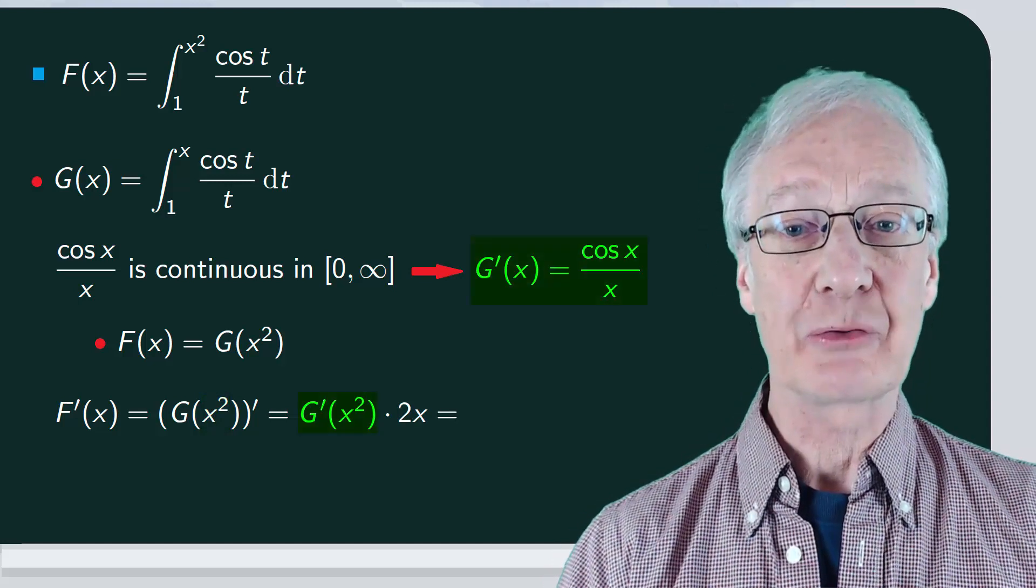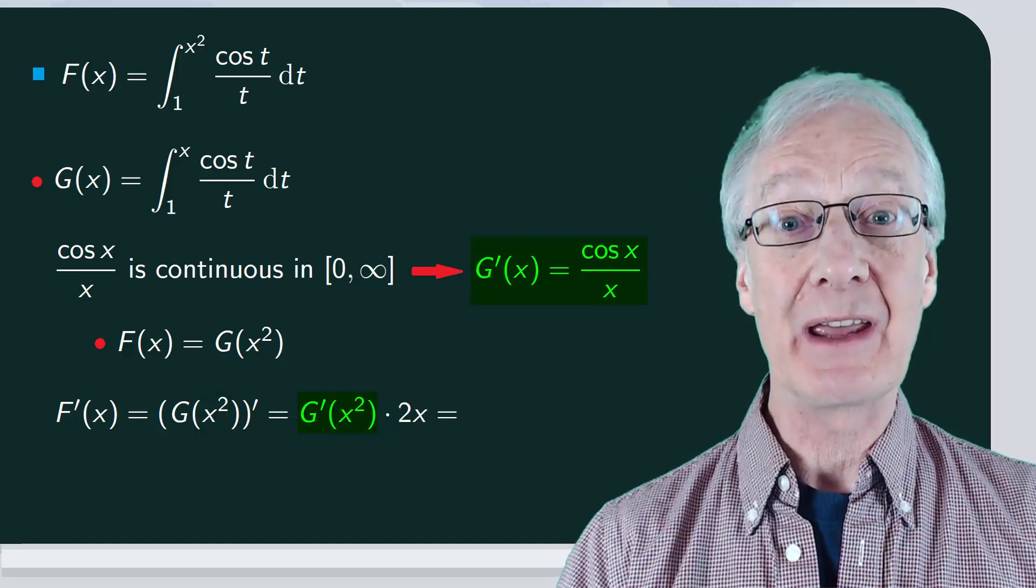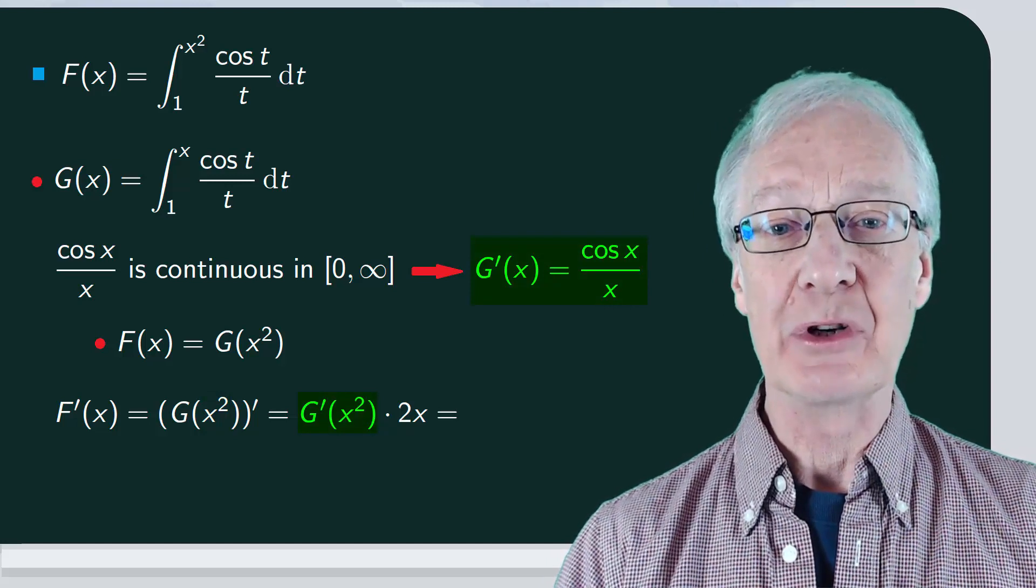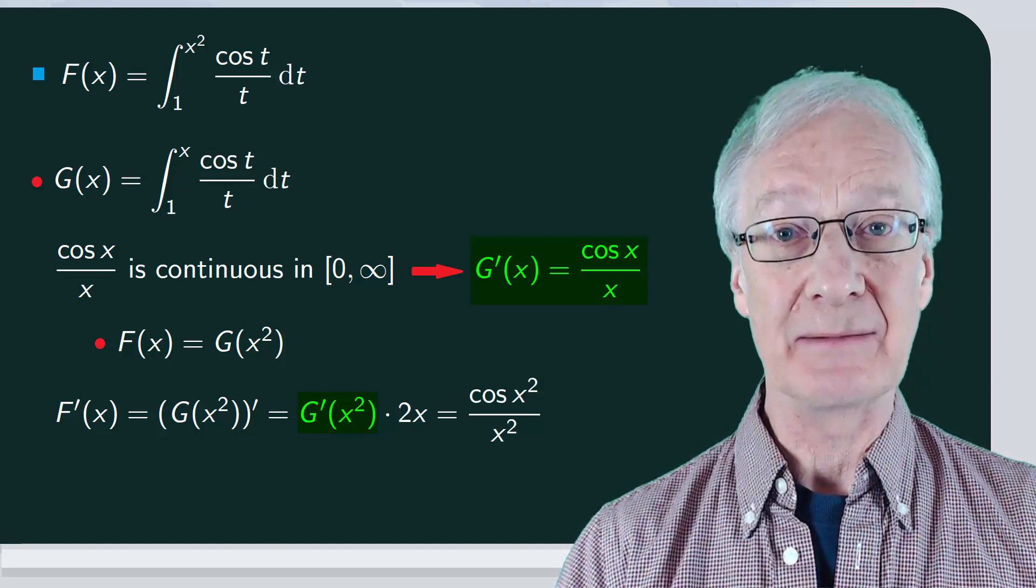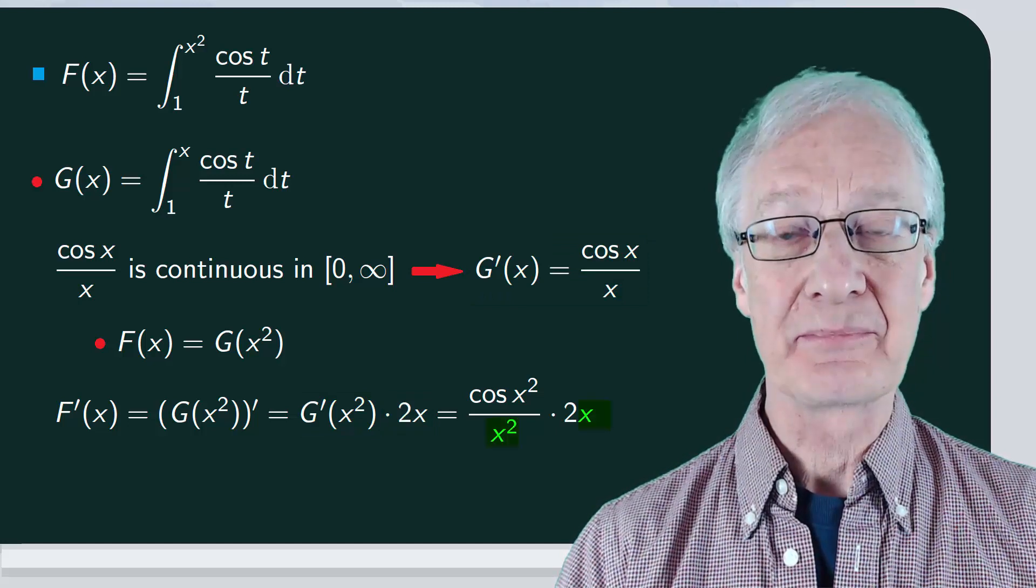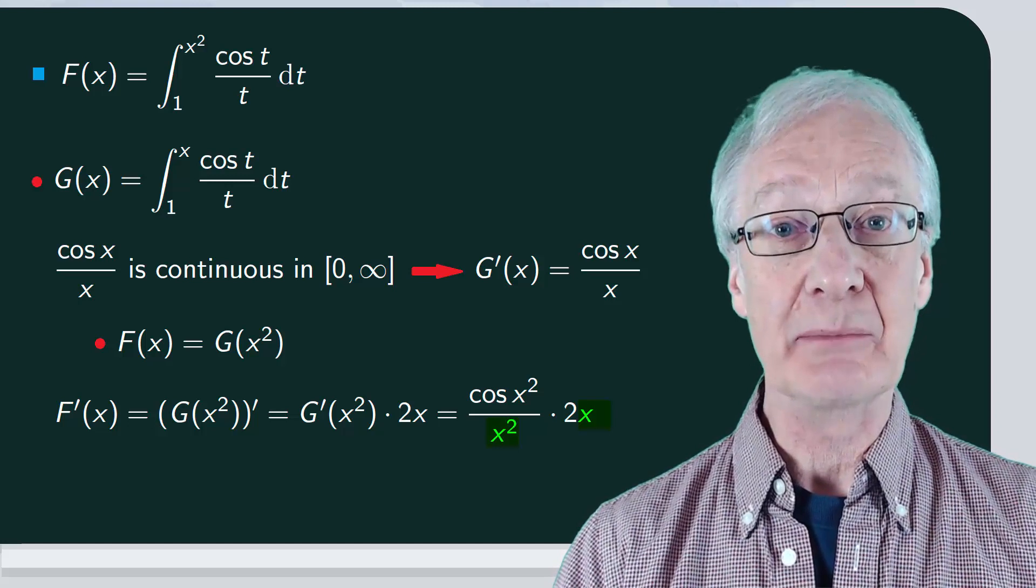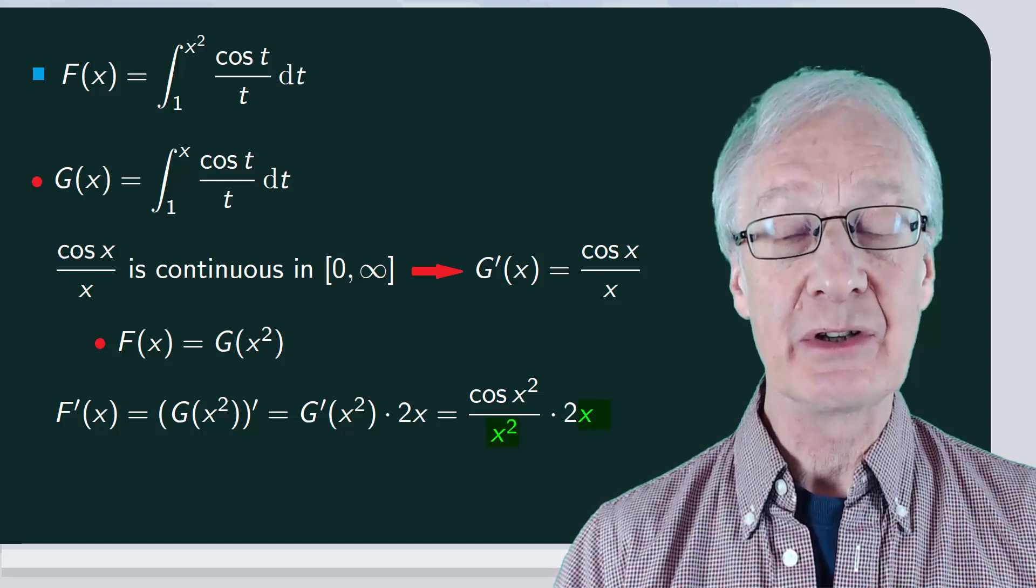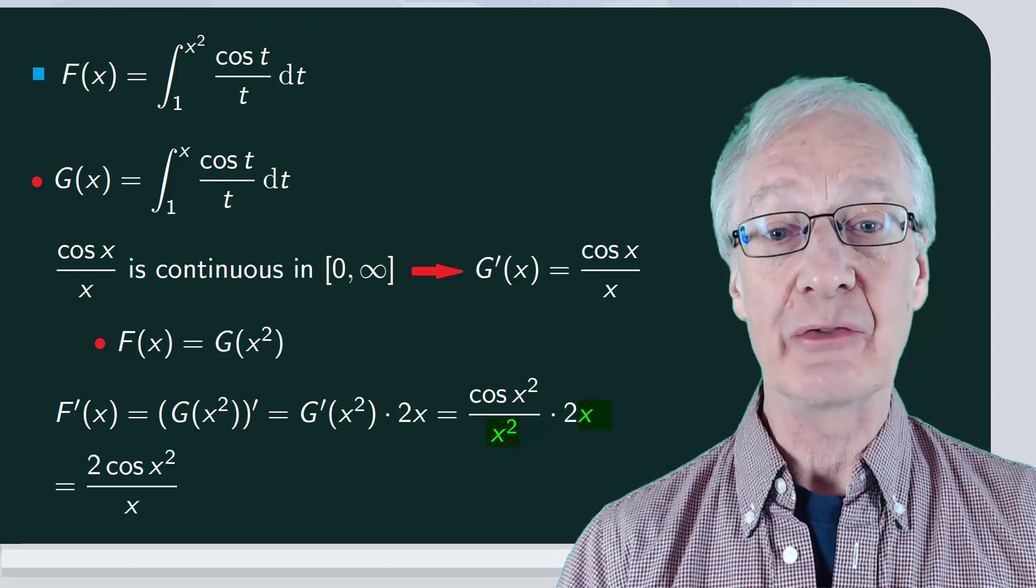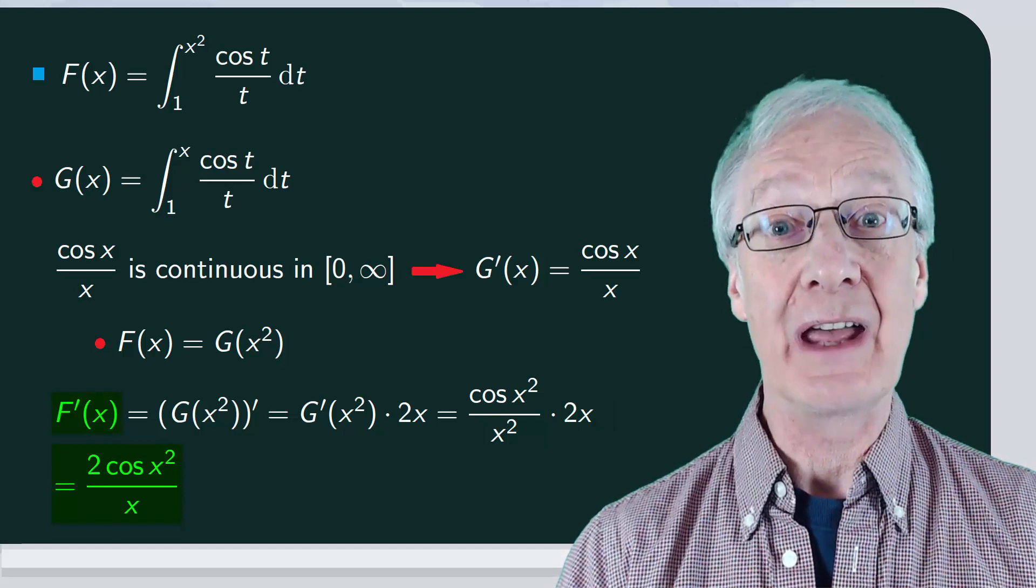g prime of x squared is the same as g of x, but with the x replaced by x squared. In other words, cos x squared over x squared. And this is times 2x. Then we can simplify by cancelling an x on the top and bottom, leaving us with 2 cos x squared over x. And there we have the derivative of f of x.